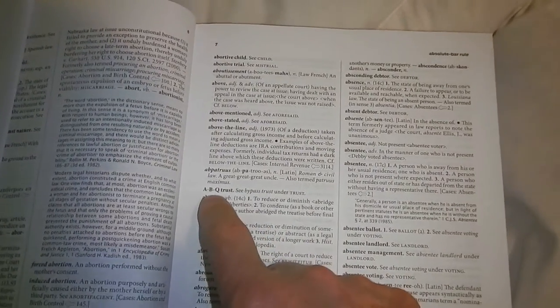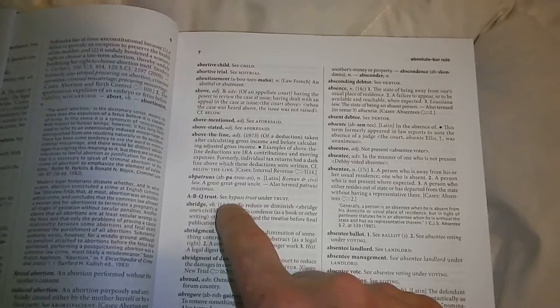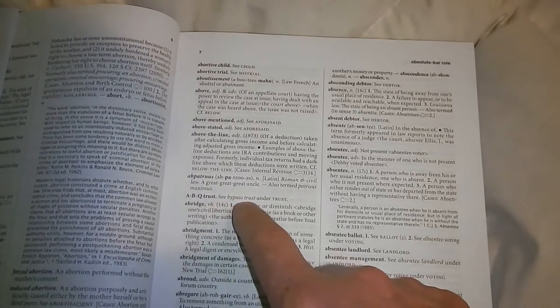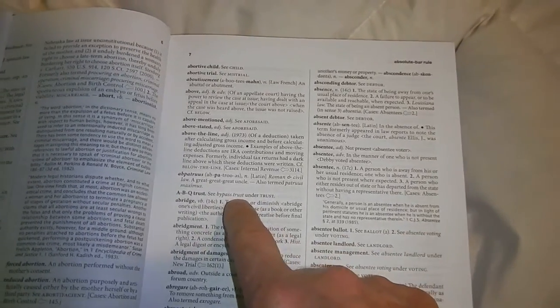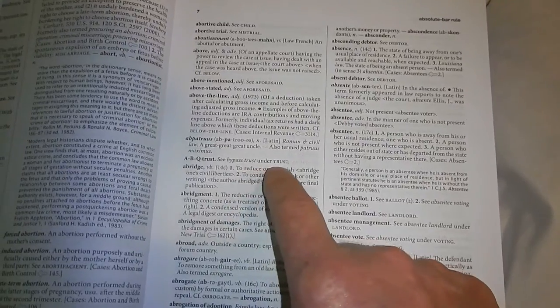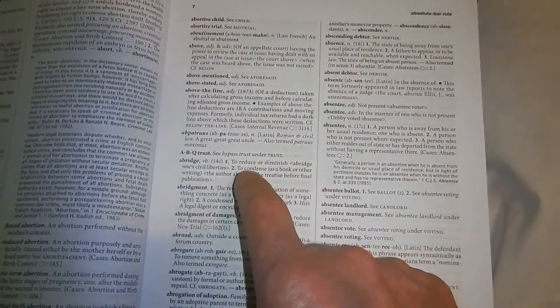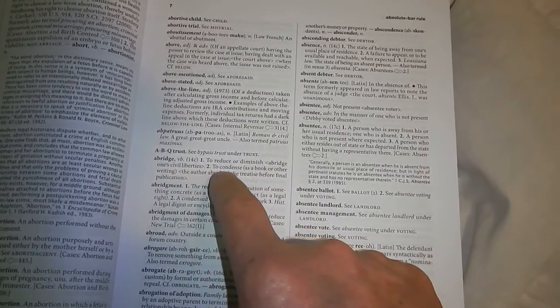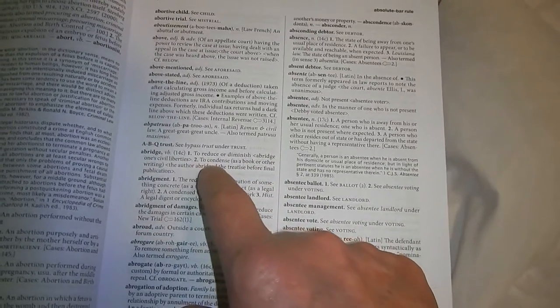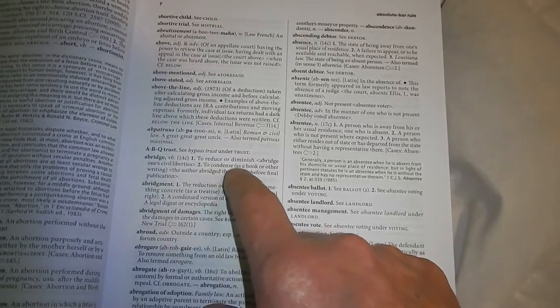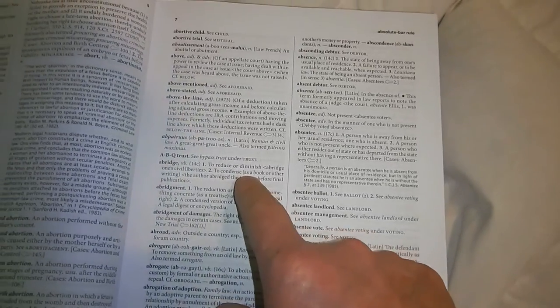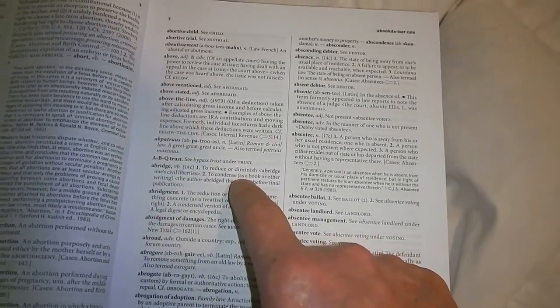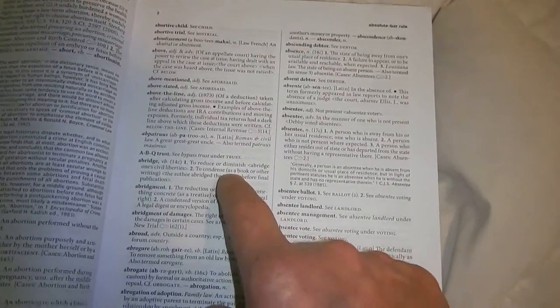What's this? ABQ trust, see bypass trust. That's a trust account bond certificate account under trust, reduce or diminish one civil liberties. One's civil liberties to condense, that's the opposite of non assumption, some say I think.